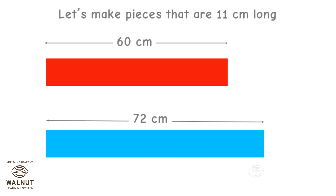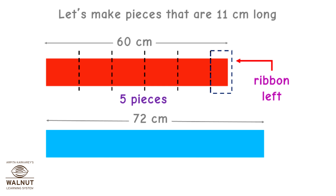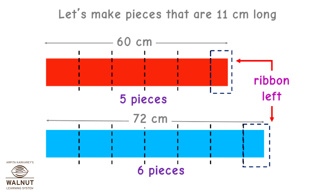Let's make pieces that are 11 cm long. If you divide 60 by 11, you will get 5 — that is 5 equal pieces. You have 5 cm of ribbon left. Now make pieces of blue ribbon: if you divide 72 by 11, you will get 6 — that is 6 equal pieces. You have 6 cm of ribbon left. So we cannot make pieces that are 11 cm long. We just can't divide it exactly.